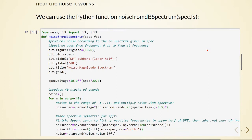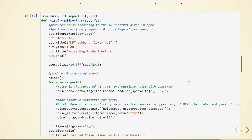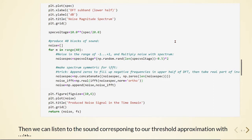We can use a Python function called noise_from_dB_spectrum, given here. This function produces noise according to the dB spectrum given in the spec argument. We produce blocks of sound, generate noise in the range of minus one to plus one, and then multiply the noise with the spectrum. Keep in mind that because we are generating noise using these blocks, we can also expect to hear some artifacts and clicks.